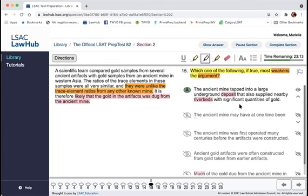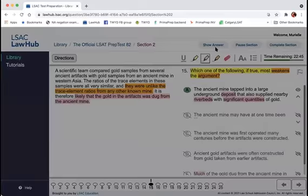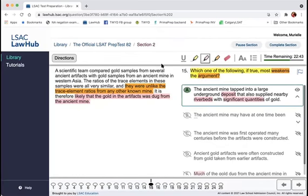So, A deals with how we got the gold. Was it dug from an ancient mine or was it potentially just panned from riverbeds? The other thing that's interesting is it says that they supplied nearby riverbeds with significant quantities of gold. So yeah, enough gold that you could make something out of it. All right. So that's question 15.